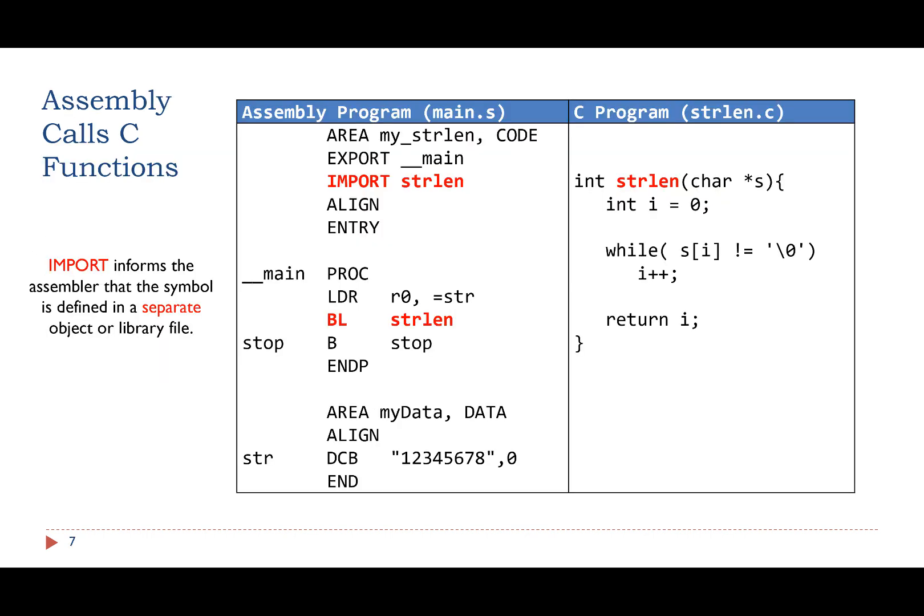This example shows how an assembly program calls a C function. Again, the C code and assembly code are in two different files. The function name strlen is a symbol.